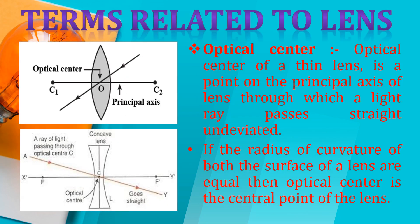Next, we have the radius of curvature. The radius of the two imaginary spheres of which the lens is a part is called the radius of curvature of the lens. A lens has two radii of curvature. You can also write it that the distance between the optical center O and the center of curvature C1 is the radius of curvature.